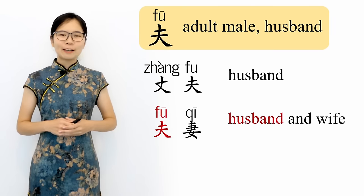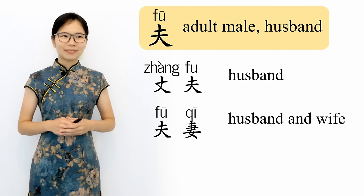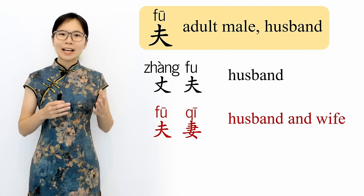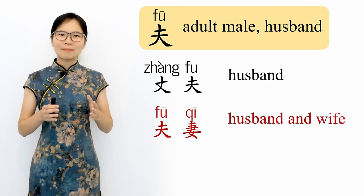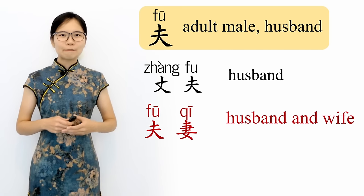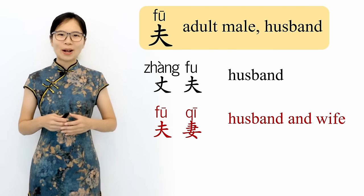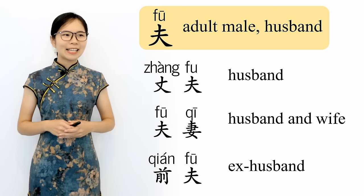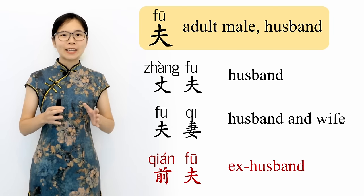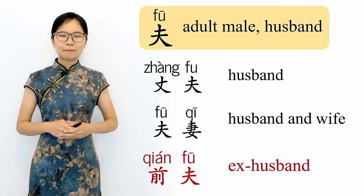夫 means husband and 妻 means wife, so 夫妻 together means husband and wife, or a married couple. 夫妻, husband and wife. 前夫 — 前 means before, so 前夫 means the husband you had before — in other words, your ex-husband. 前夫, ex-husband.